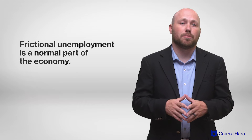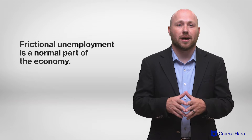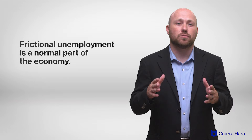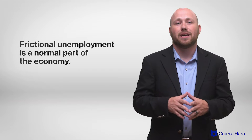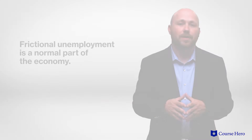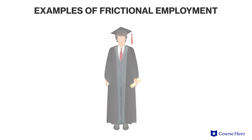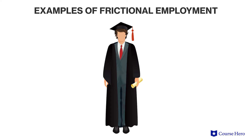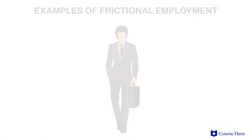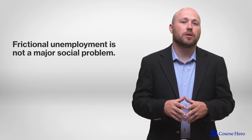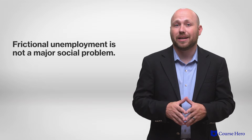Frictional unemployment is a normal feature of the market economy in which workers move freely from job to job and need time to make the move. An example of frictional unemployment is a student who has graduated from college and is unemployed while looking for their first career-oriented job.